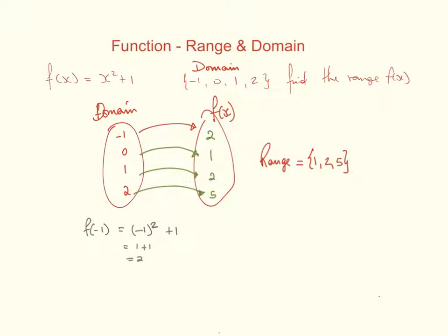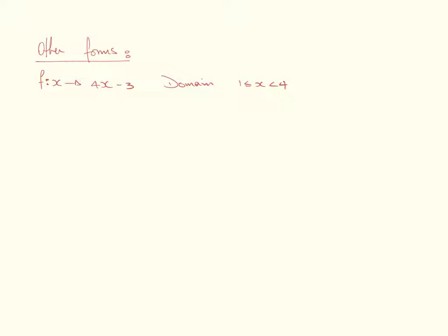Now, they might show it to you in a different way. It could look like this, where they said f. Well, I've covered this in my first video as well. But this is basically the same as saying f(x) = 4x - 3. It's nothing strange about that. But sometimes they write it like this. It says f maps x onto that function there. So anyway, they've given me the domain like this.